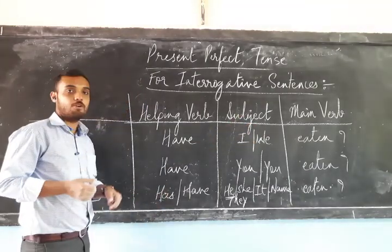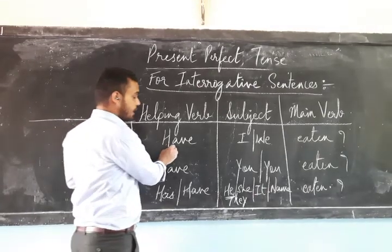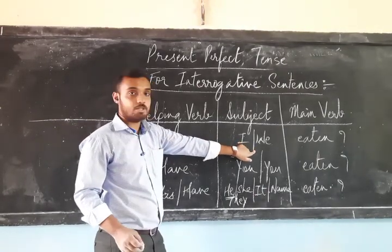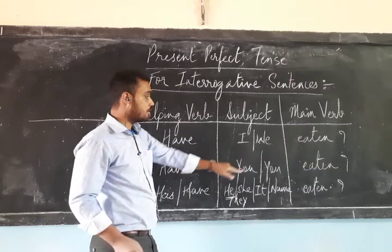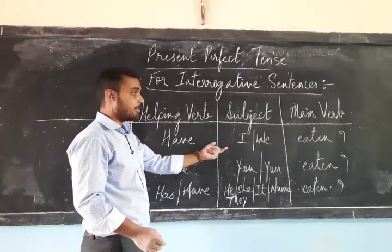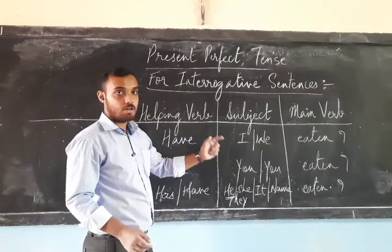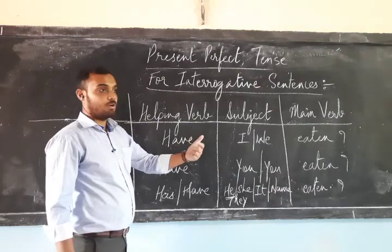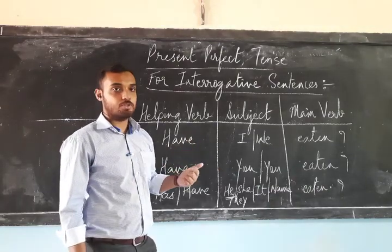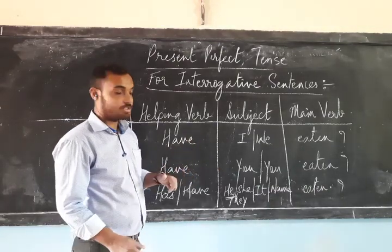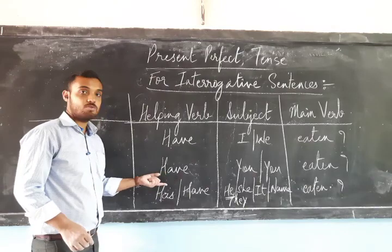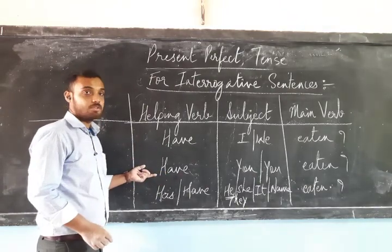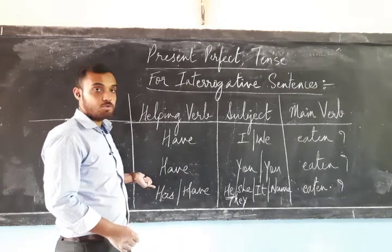That is how we form an interrogative sentence. 'Have' can be used for both singular and plural subjects — for example, 'Have I eaten?' or 'Have we eaten?' Since 'you' is used for both singular and plural subjects, we also use 'have' with it. For first person and second person we use 'have'.